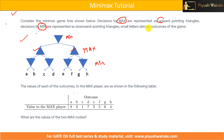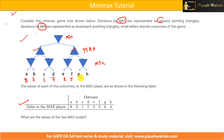Small letters denote the outcomes of the game, and A, B, C, D, E, F, G, H are the outcomes of this particular game. The value of each outcome to the max player is given in the table: A is 8, B is 3, C is 1, D is 7, E is 2, F is 5, G is 6, and H is 4.